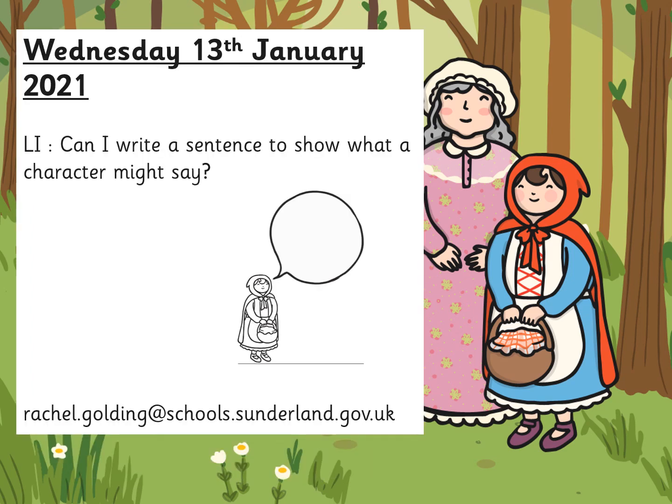Have a go at that today. You're going to write a sentence to show what the character might say — you might have Little Red Riding Hood, you might have a different character. When you've done it, you can pop it back in your pack and send it back to us next week, or you can send a photograph to my email address, or you can pop it on our Facebook page — it's the Key Stage 1 Home Learning Group that you can all join if you wish to. Enjoy your writing and hopefully you'll come up with some fabulous ideas. Well done guys, bye!